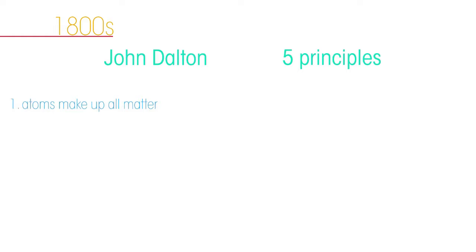The next leap forward in our understanding of atoms came in the 1800s. A man called John Dalton concluded five main things from experiments he had been doing. One: atoms make up all matter. Two: atoms cannot be subdivided into smaller particles.